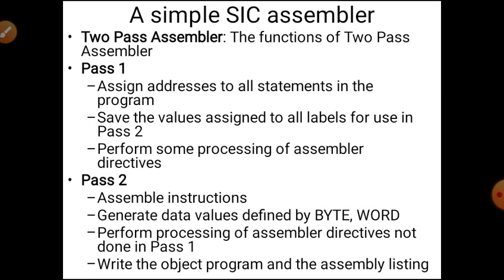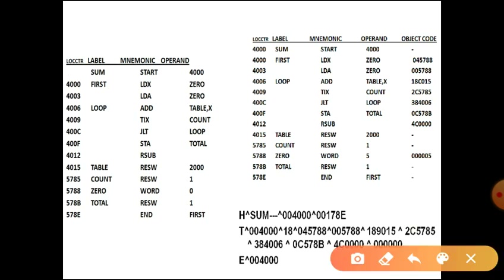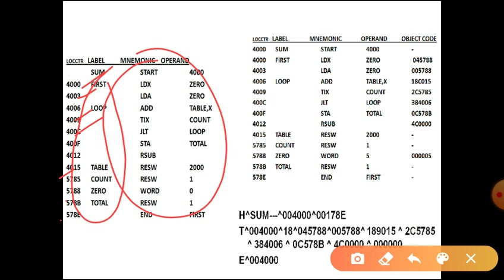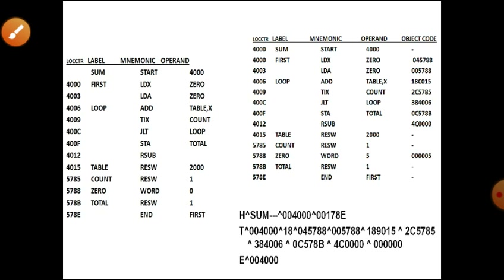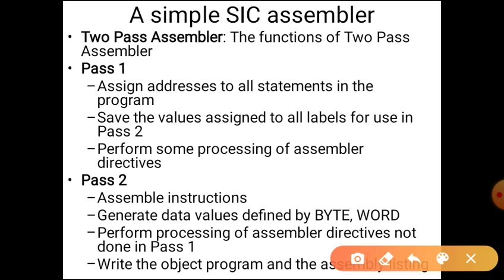These are the different functions carried out during pass one. All statements are assigned addresses, and symbols are also assigned addresses and saved. Assembler directives are processed — for example, RESW checks how much memory space needs to be reserved. Pass one then generates an intermediate file.